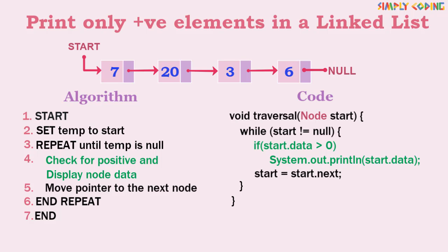If yes, we print the data. You could get multiple variations of the program, like print only even numbers, odd numbers, or any other condition. In all of these you just need to change the if condition and then call the print.